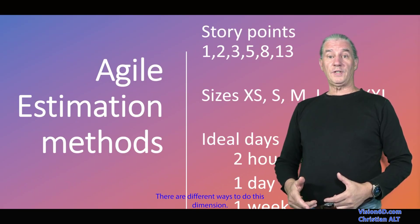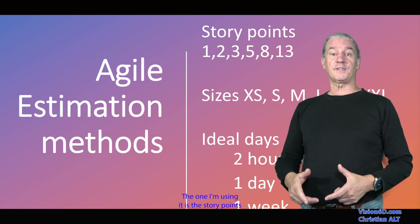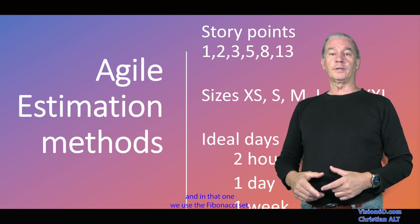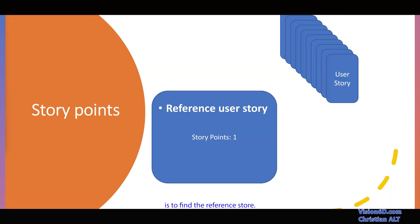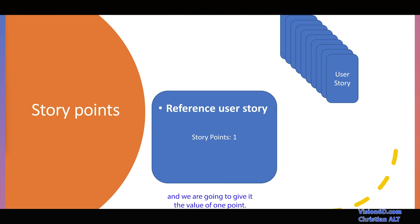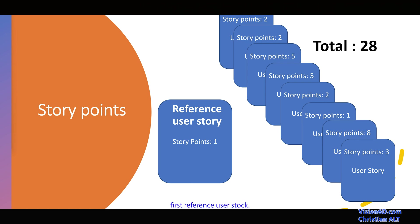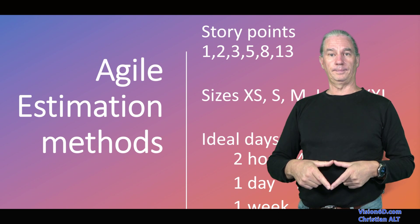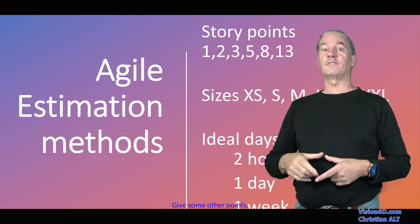With agile methodologies, there are different ways to do the estimation. The one I'm using is story points, and in that method we use the Fibonacci series. What we are going to do is find a reference story — the simplest user story we can find — and give it a value of one point. Then we will be able to compare other stories to that first reference user story and, relatively to that, give some other point values.